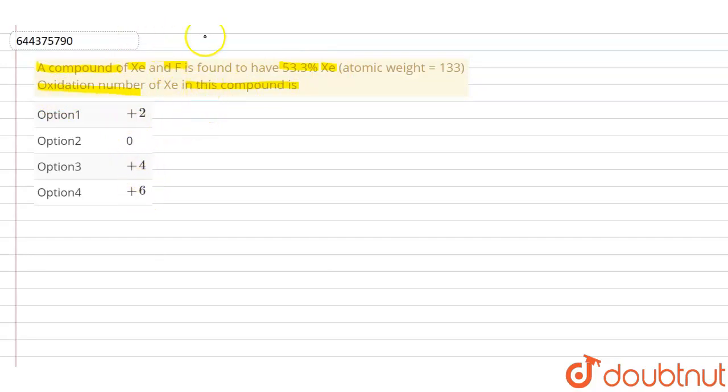So see this answer. Now we are given the percentage of xenon in the compound, 53.3 percent. So if the total value of the compound is 100, we can easily find out the percentage of fluorine in the compound.